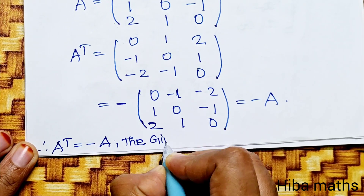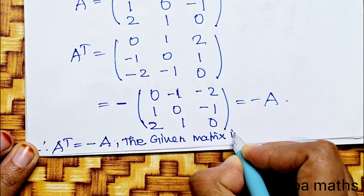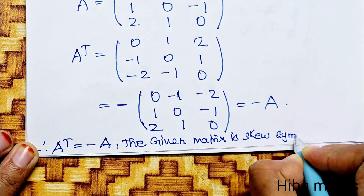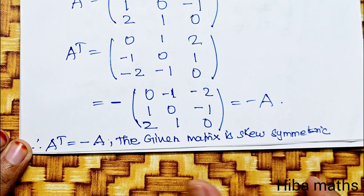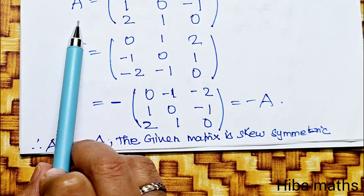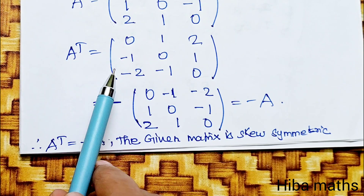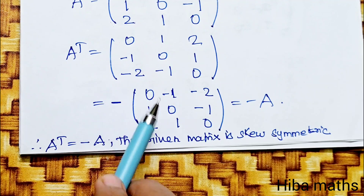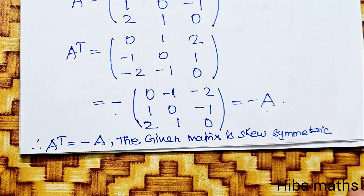The given matrix is skew-symmetric. To verify: we do the transpose of the matrix. If the transpose equals minus of the matrix, it is skew-symmetric. A transpose equals minus A — it is skew-symmetric. Thank you so much for watching.